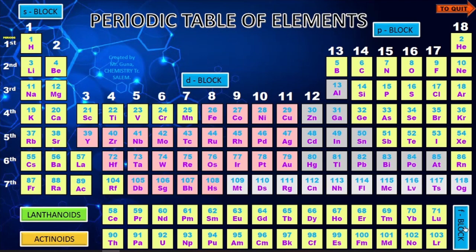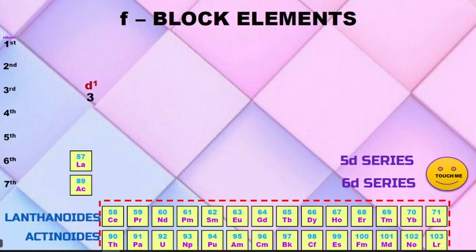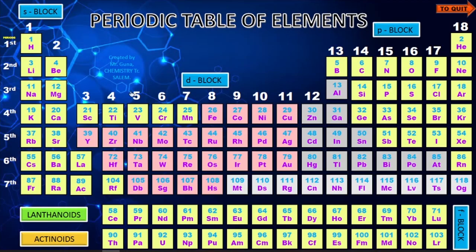For F block elements, you can see the lanthanides and actinides. The lanthanide series starts from lanthanum and goes up to lutetium, and the actinide series goes from actinium up to lawrencium. All those details are given. Click 'Touch Me' to return to the main periodic table. You can also explore lanthanides and actinides individually.